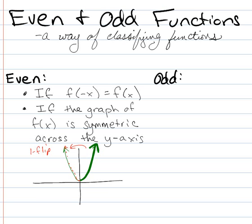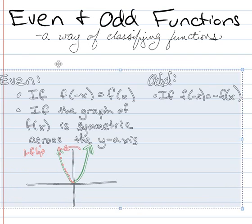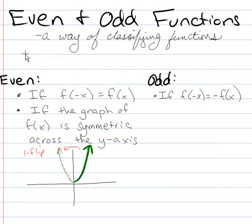Now odd functions, pretty similar. But it says a function is odd if f of negative x equals negative f of x. So let me move everybody over a little bit. So if f of negative x equals negative f of x, or if the graph of f of x is symmetric across the origin.